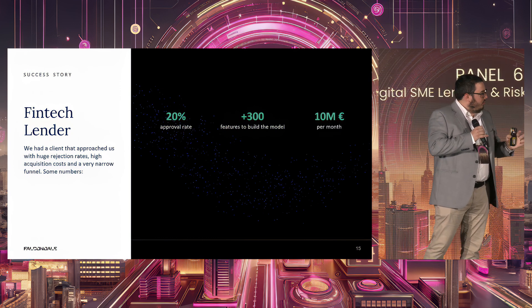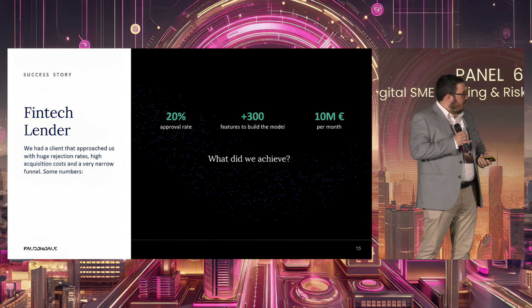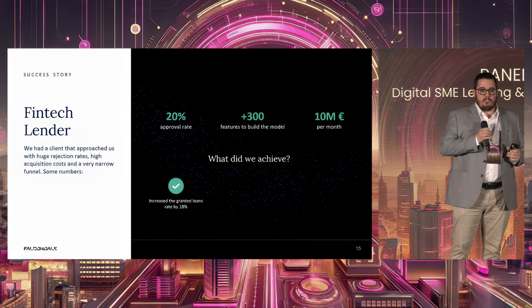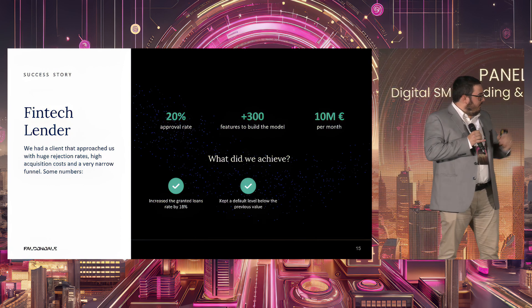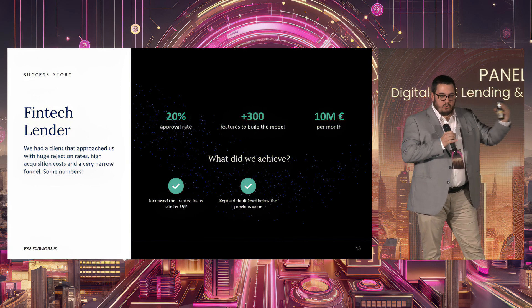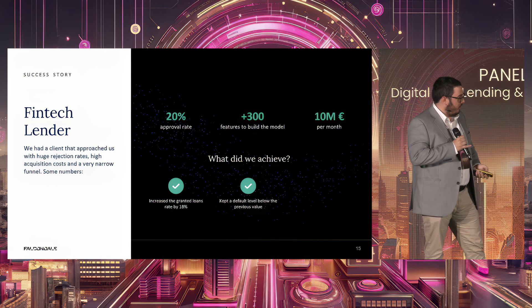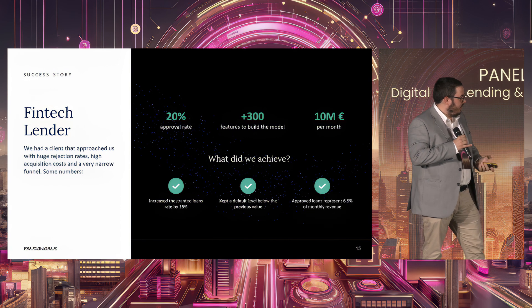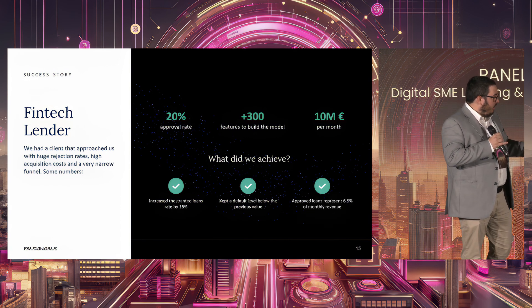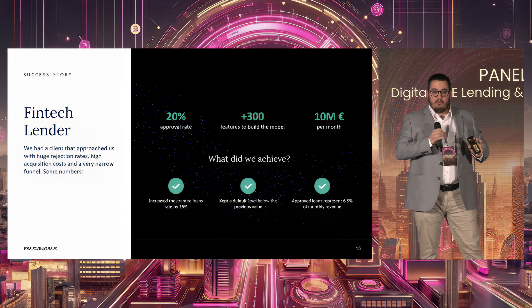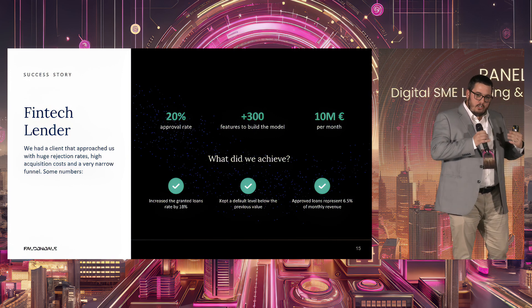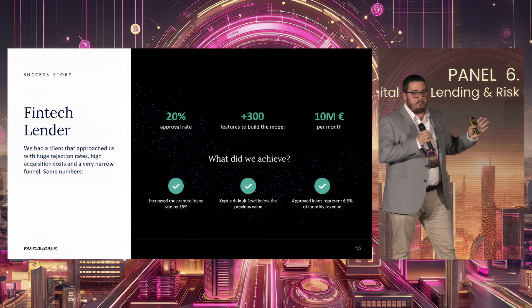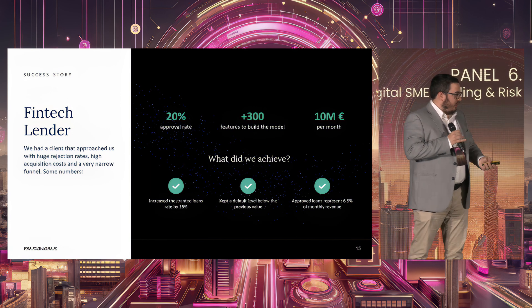What did we achieve in this scenario? We increased the granted loans rate by 18%. We kept the default level below the previous value — because it's really easy to increase your approval rate if you accept more default, but we didn't. We actually lowered it, essentially because they kept the same absolute defaults but were now distributing more loans: same numerator, bigger denominator. And we approved loans representing 6.5% of their monthly revenue.